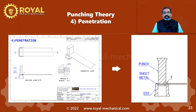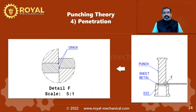The next stage is the penetration. Let's take a closer look at detail view F. As the punch descends further, it penetrates the raw material. Cracks are initiated both on the punch side as well as on the die side.